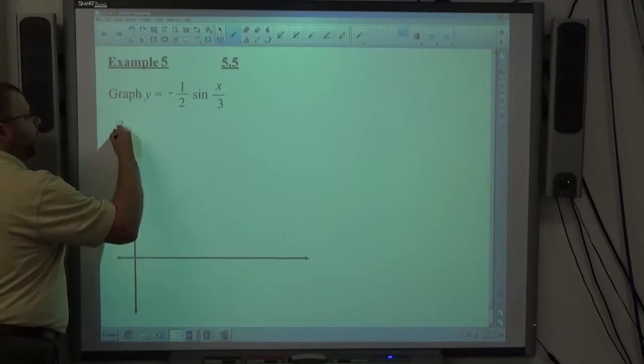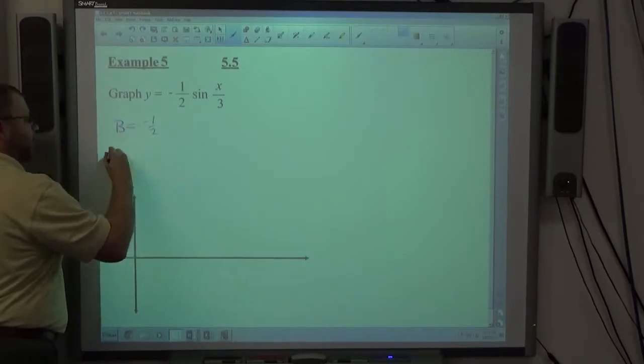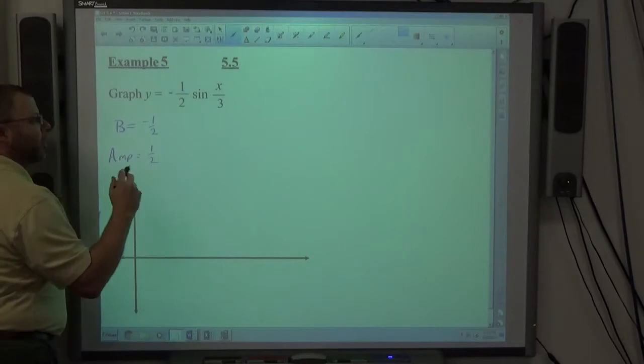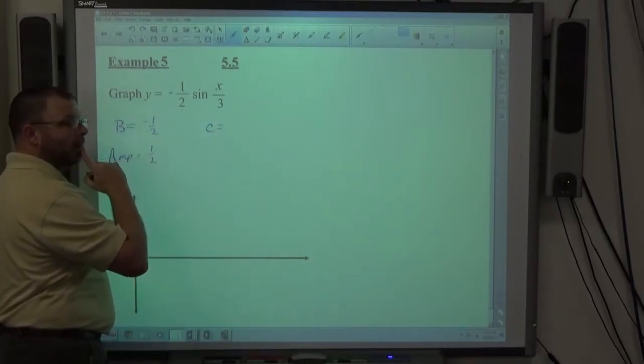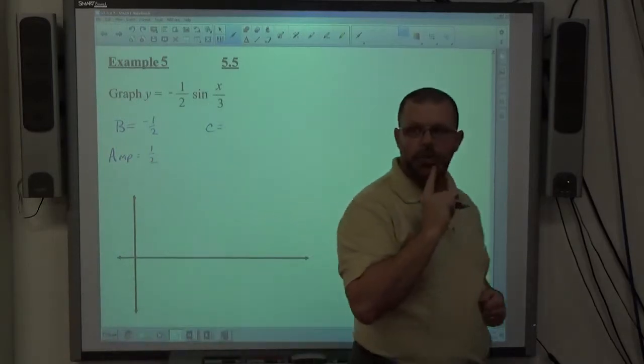In this case, B is equal to negative 1 half, which means the amplitude is going to be 1 half. The C value is going to be what? What do you think the C value is here?